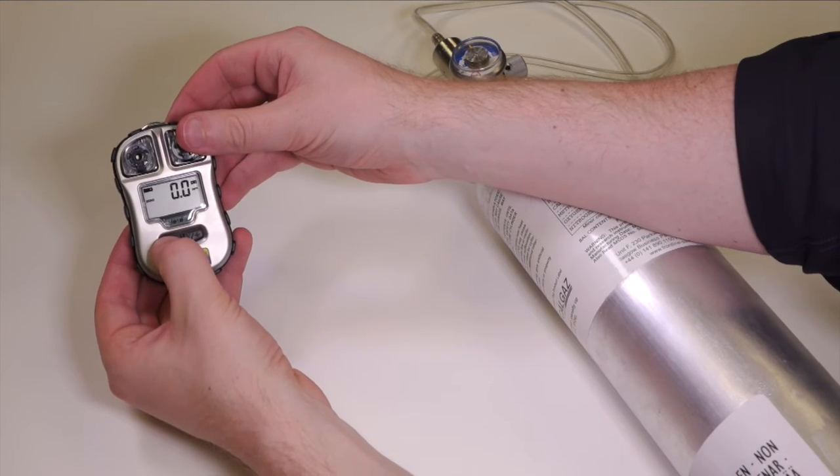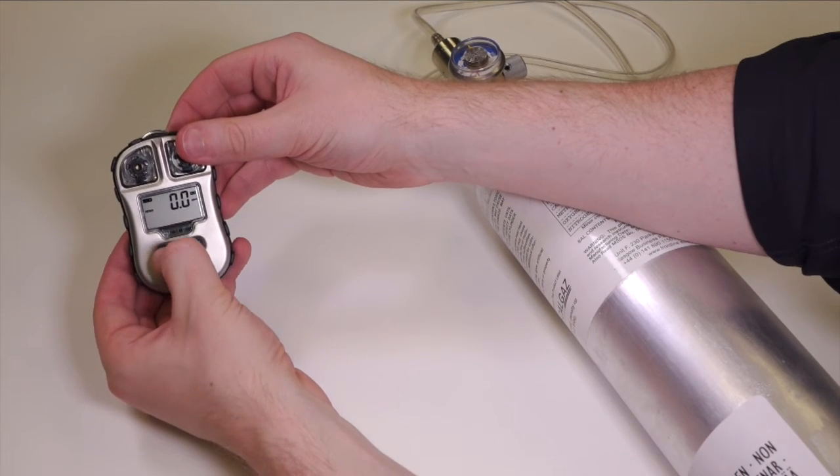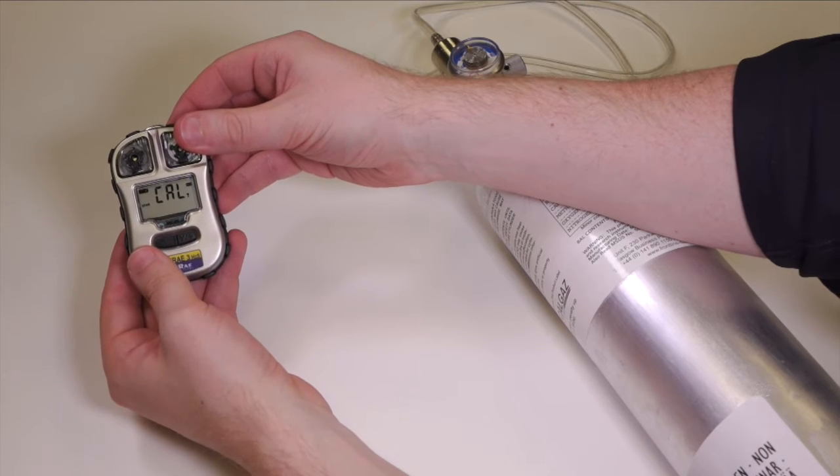So the zero cal is complete, just acknowledge that by hitting again the left hand key and it's now asking us if we want to do the span cal.